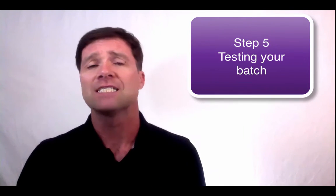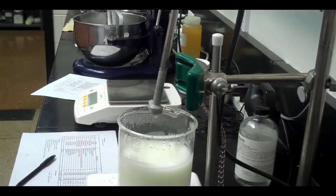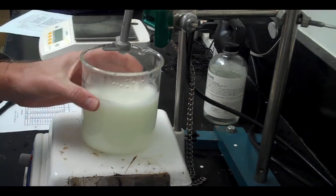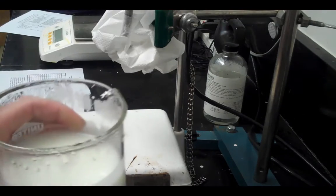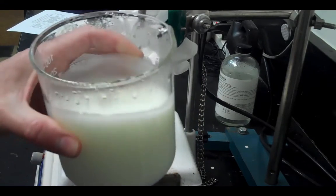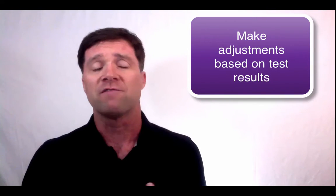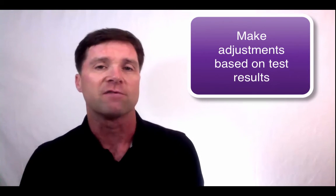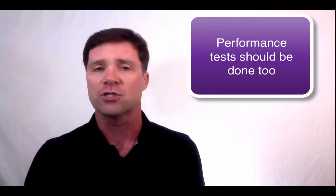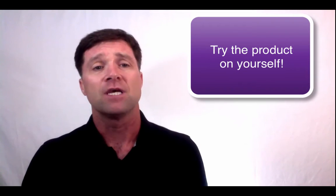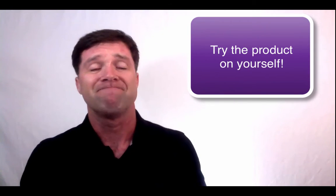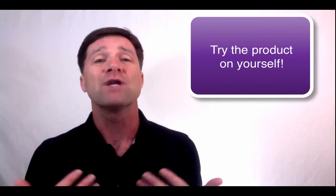The next step is testing your finished batch. Once you've finished your formula, you'll want to test it to see how close you got to the specified characteristics. After letting the sample equilibrate at room temperature, take appropriate measurements like the pH and the viscosity to see if you are within your specifications. Also, weigh the batch to see how much water weight was lost during the heating and cooling process. If you've lost more than a few percent of water, you may want to add water to make up the difference. In addition to specification tests, you should also do some performance tests to see how well the product functions. At the very least, try the product on yourself. You should try all your products because if you won't use the products that you make, then how can you expect anyone else to use them?